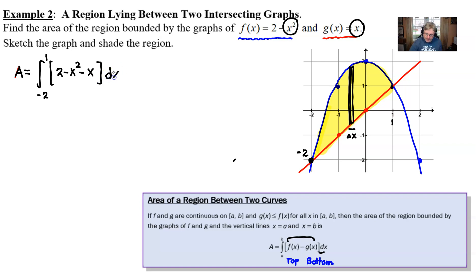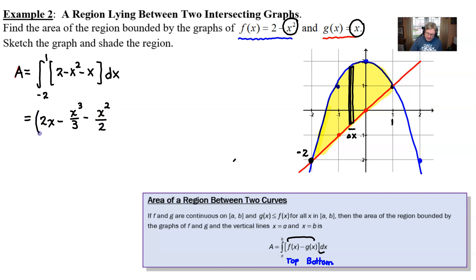That gives you your integration setup. The rest is the basic integration procedures from unit 6. The antiderivative of 2 is 2x, the antiderivative of x squared is x cubed over 3, and the antiderivative of x is x squared over 2. All of this gets evaluated from 1 down to negative 2. We notice that 0 is not an integration boundary — we just have to live with it.